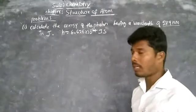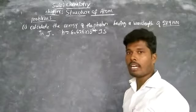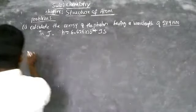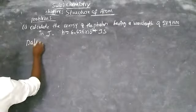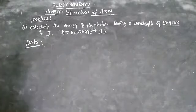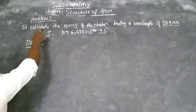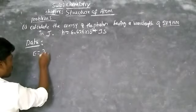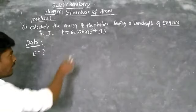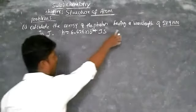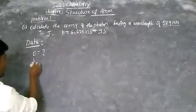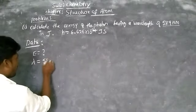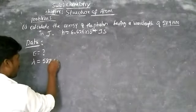Write the data — what is given and what is asked to calculate. What they ask is energy E. The formula is E equals H times nu. They ask to calculate E, and the wavelength lambda is 589 nanometers.